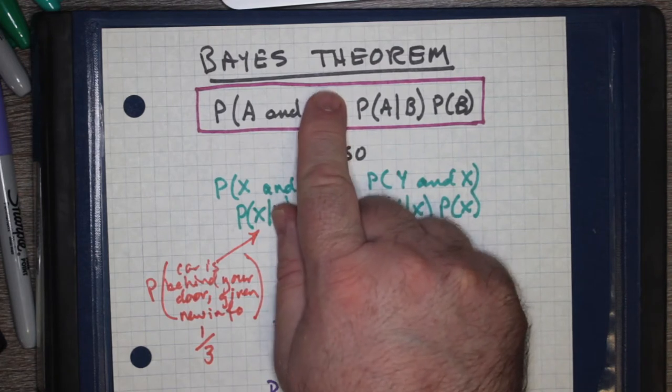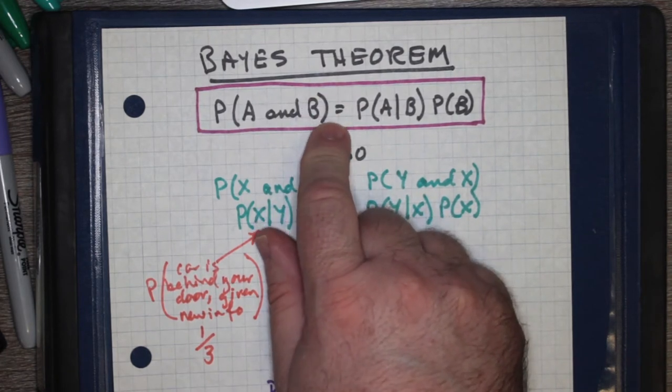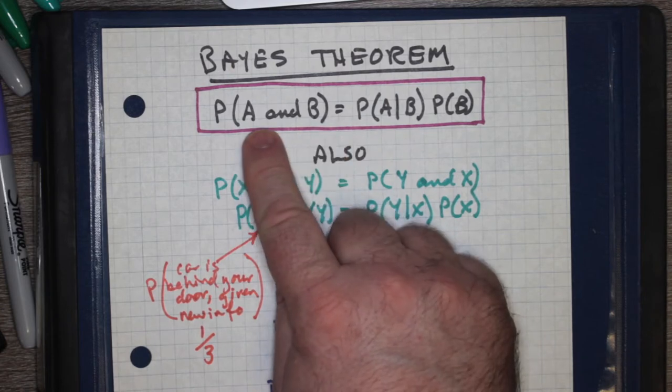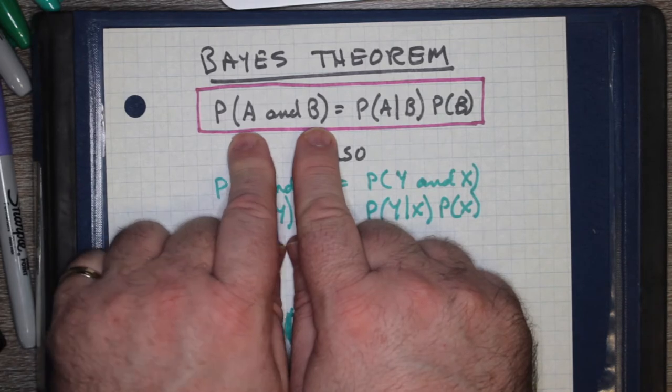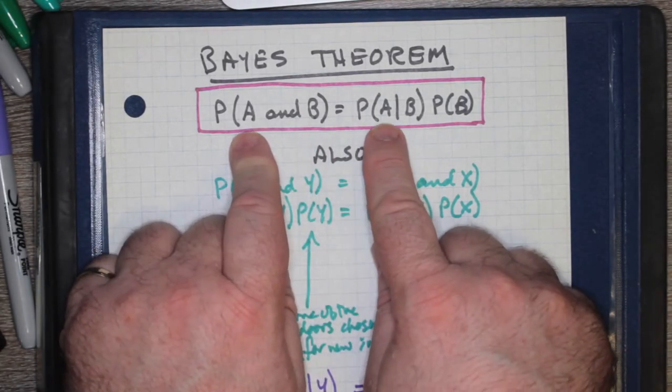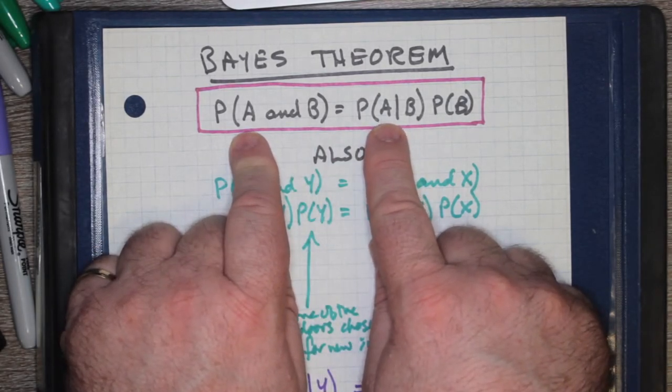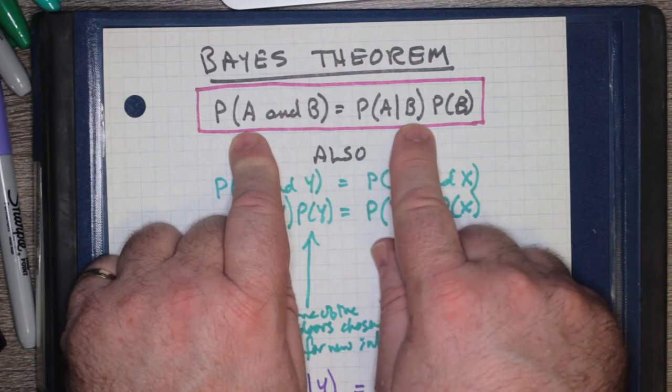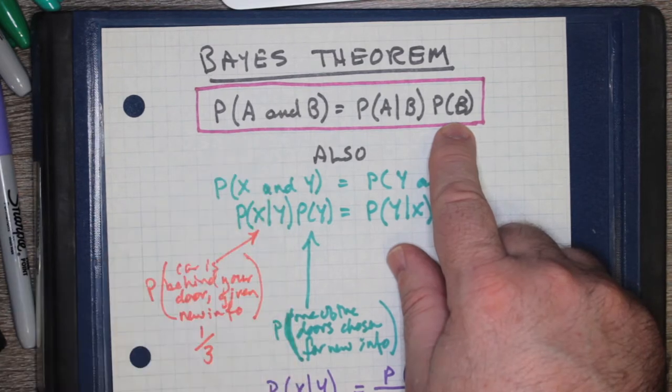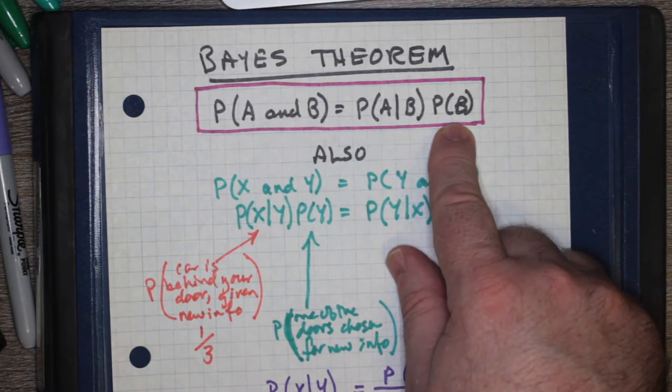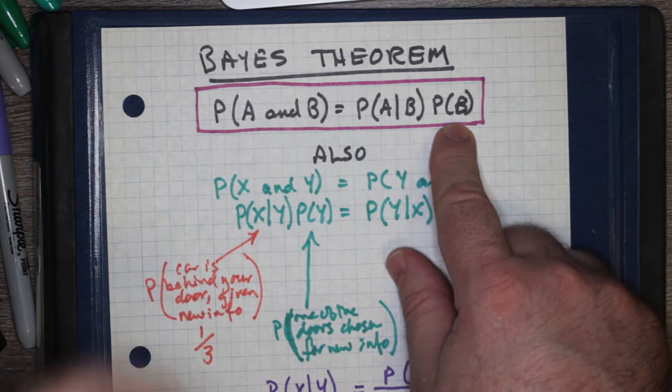There is actually an answer to this problem through dependent events. The product rule for dependent events, as it's described in our textbook, is actually known as Bayes theorem, and it's saying that the probability of two things, two dependent events occurring together, is the probability of one of the events given the other has occurred times the probability of the other actually occurring.